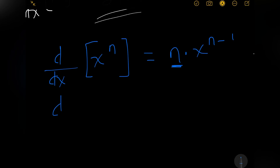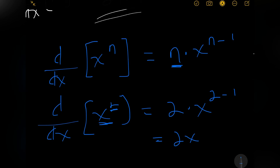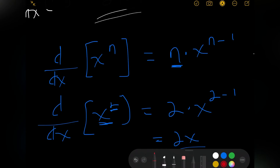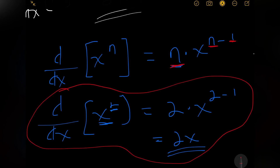So for our function x squared, the derivative of x squared is equal to — n in this case is 2, so we carry that down and multiply it by x to the 2 minus 1, which gives us 2x. We found the derivative of x squared using the power rule — we multiply by n and subtract 1 from n. That's all, and we can see this is a lot faster than using first principles.